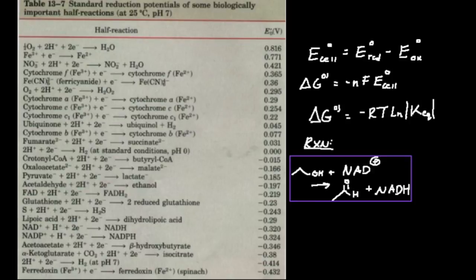These are quantities that are defined at equilibrium for oxidation-reduction reactions. We're going to quantify something called the cell potential, and then use that to calculate the Gibbs free energy at equilibrium, and from that we can even calculate the equilibrium constant.